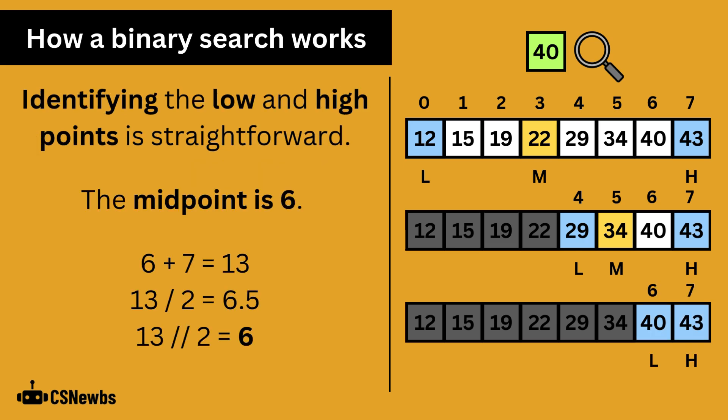Identifying the low and high points this time is straightforward. And the midpoint is 6. 6 plus 7 is 13. 13 divided by 2 is 6.5. Integer division will change that to just 6. Alternatively, you can see there are only 2 values left. 2 divided by 2 is 1, so the first value is the midpoint, which is 40.